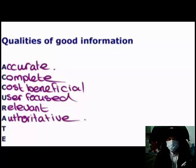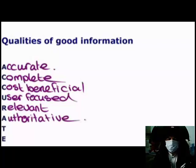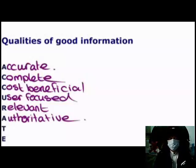Good information must also be authoritative. This means that the person providing the information should know what they are talking about — they should have researched that information before providing it. So if I'm asking for directions to the train station, the person providing them should either have been to the train station before or have some other way of knowing that the information they are providing me with is reliable.